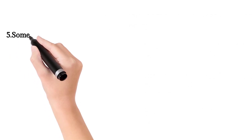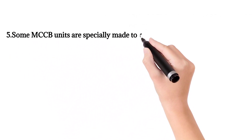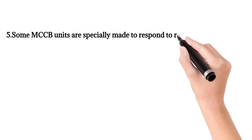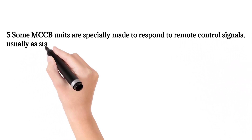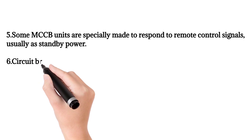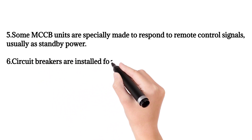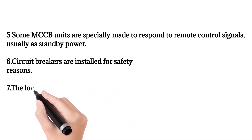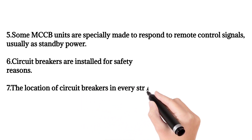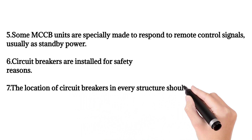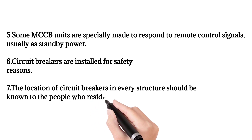5. Some MCCB units are specially made to respond to remote control signals, usually as standby power. 6. Circuit breakers are installed for safety reasons. 7. The location of circuit breakers in every structure should be known to the people who reside in it.